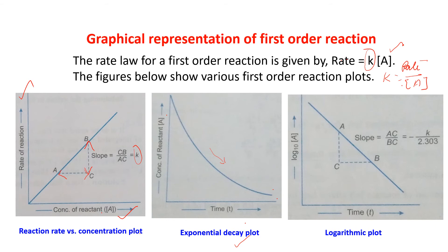Another graph is the logarithmic plot, where we plot log₁₀[A] versus time. We get a straight line with a negative slope, and the slope of the graph gives −K/2.303. This completes the graphical representation of first order reaction, and we will next cover the half-life.